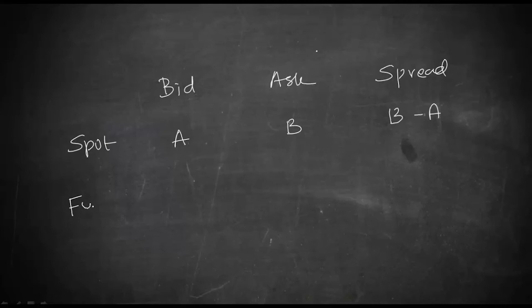Similarly, you can also have a bid rate in forward. I will call it as alphabet C. And you can also have ask rate in forward. I will call it as D. Then you will have the spread as D minus C.